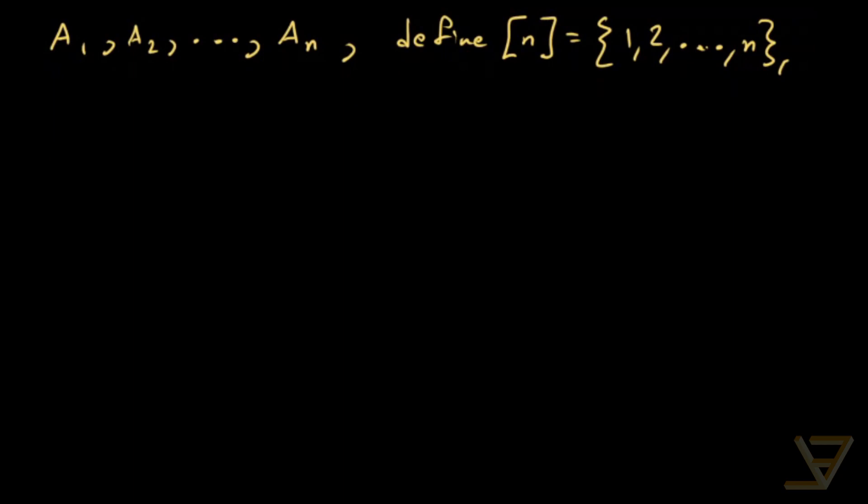So what we get is that for k is less than or equal to n and greater than or equal to 1, we're gonna define Sk to be the sum of the intersection of Aj's, where we have capital J is a subset of the first n integers, such that we're choosing exactly k elements in that subset.